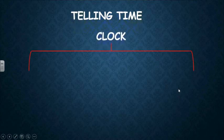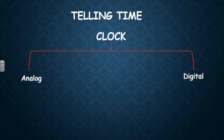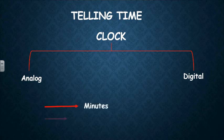We have two types of clock. The first one is called analog, and this means we will write the time by letters. And the second one is called digital, and this means we will write the time by digits. We must know that the long hand in the clock is for minutes, and the short hand in the clock is for hours.